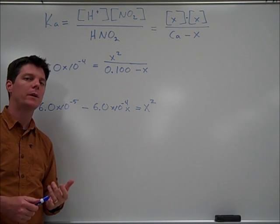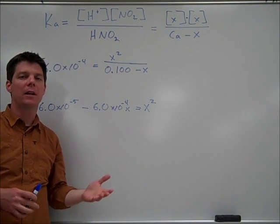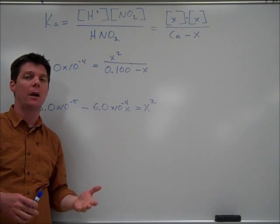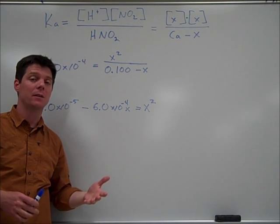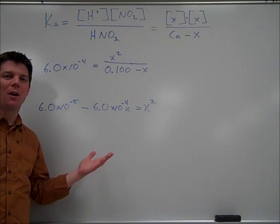My end goal is I really want to solve for x because x should tell me the hydrogen ion concentration, which would allow me to calculate pH by taking negative log of the hydrogen ion concentration. So how am I supposed to solve this for x?